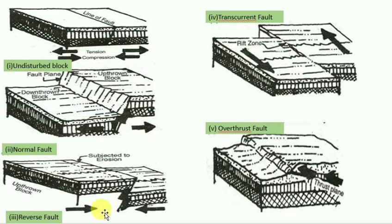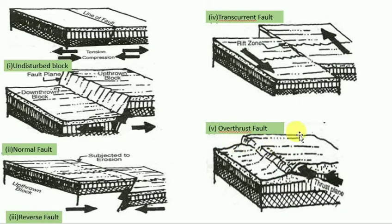In an overthrust fault, tension occurs on a thrust plane. These are the different faults that happen due to tension and compression in orogenic and mountain-building diastrophism.